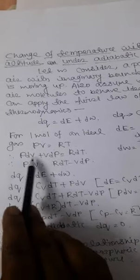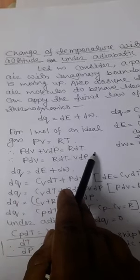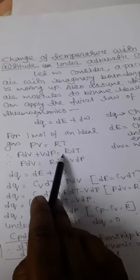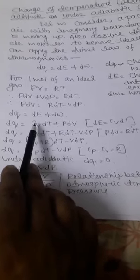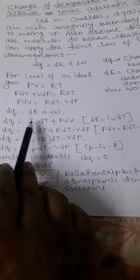For one mole of an ideal gas, pV equal to RT. Differentiating: p·dV plus V·dp equal to R·dT, where R is the molar gas constant. So p·dV equal to R·dT minus V·dp. From the first law, dq equal to dU plus dW, and dU equal to Cv·dT from the definition of molar heat capacity at constant volume. So dq equal to Cv·dT plus p·dV.